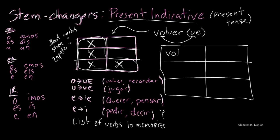Volver. So the first thing that we want to do, we're going to put this into the yo form. We take off our ER, the first thing that we do. And we will put our ending on for the yo form of an ER verb. But we have a second step. And that means that this O has to change to a UE. And so we would have Vuelvo. The O changes to a UE.